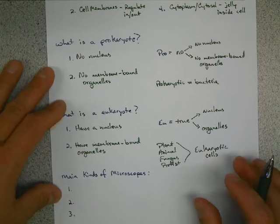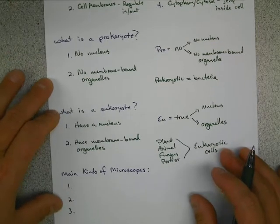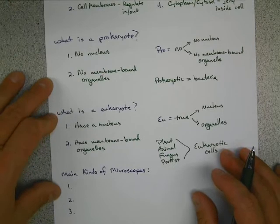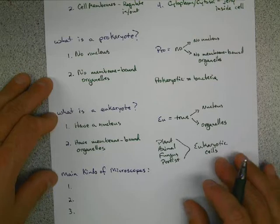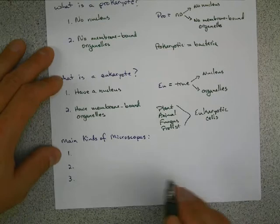Another thing you want to know about eukaryotic cells and prokaryotic cells, eukaryotic cells are much, much bigger. Prokaryotic cells are much tinier. There's a link on our Moodle page to a little animation that shows you the different sizes.